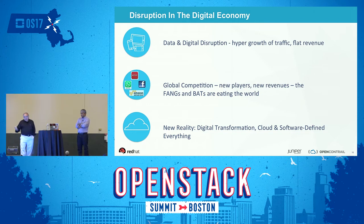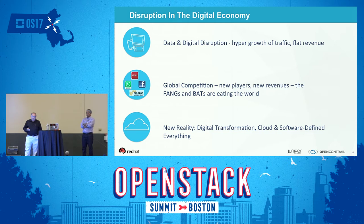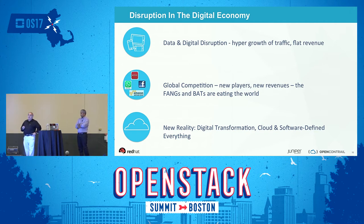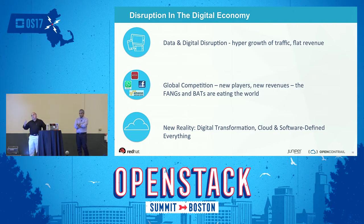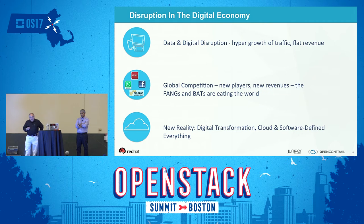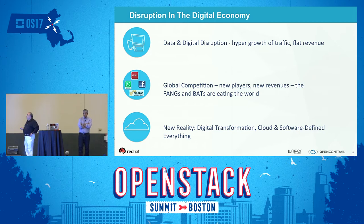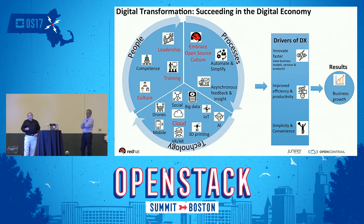We need to build networks differently. There's also global competition from new players — FANG (Facebook, Amazon, Netflix, Google) and BAT (Baidu, Alibaba, Tencent), the Chinese equivalent. What these companies are doing drives a new reality: in order to address digital transformation, we have to turn to cloud and software-defined everything.